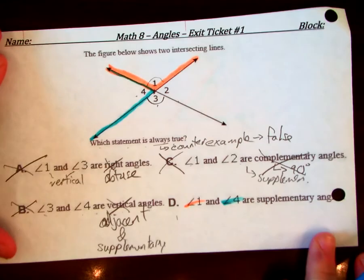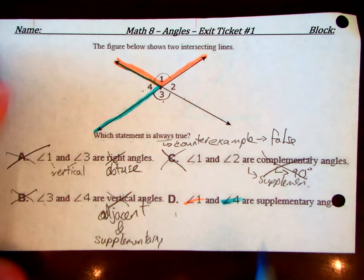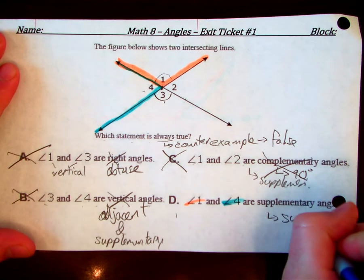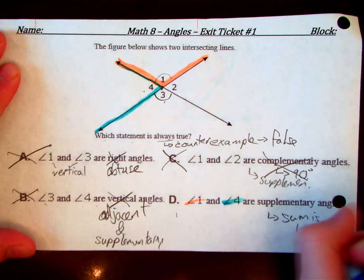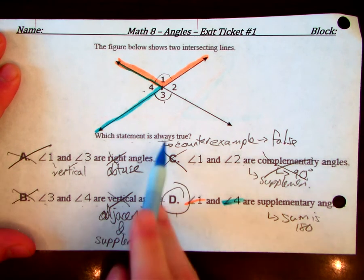Are supplementary angles. And they don't have to be adjacent, but they do have a sum. The sum is 180. And so, we know that this is always true.